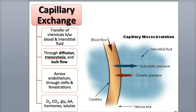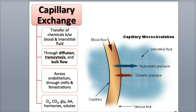The capillaries make diffusion possible because they have thin walls consisting of a single layer of endothelium. They also have gaps between endothelial cells called intercellular clefts, and pores in the plasma membrane called fenestrations. Chemicals that are soluble in water move through the capillaries, intercellular clefts, and fenestrations, while lipid-soluble chemicals, including oxygen, carbon dioxide, and the steroid hormones, are transported directly across the plasma membrane of the endothelial cells.